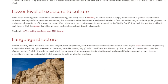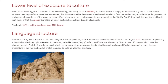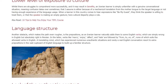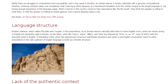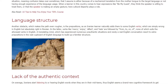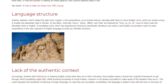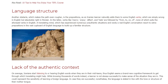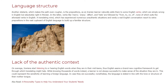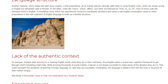Language Structure. Another obstacle which makes the path even rougher is prepositions, as an Iranian learner naturally adds them to some English verbs which are simply wrong in English but absolutely right in Persian. In Persian, verbs like marry, enjoy, affect, and hate are followed by from, to, on, or of — none of which suits these verbs in English. A translating mind, which has experienced numerous unauthentic situations and rarely a real English conversation, resorts to extra prepositions from the vast repertoire of the English language to build up a familiar structure.